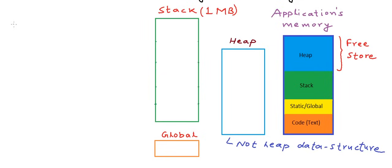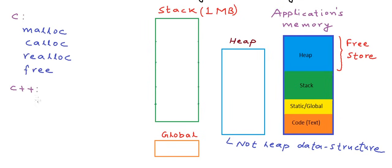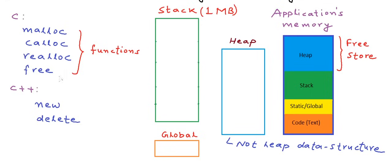To use dynamic memory in C, we need to know about four functions: malloc, calloc, realloc, and free. To use dynamic memory in C++, we need to know about two operators: new and delete. These four functions can also be used in C++ because C++ has backward compatibility — it is only a superset of C. But C++ programmers mostly use the new and delete operators. We will see some code examples to understand how things happen when dynamic memory is used.